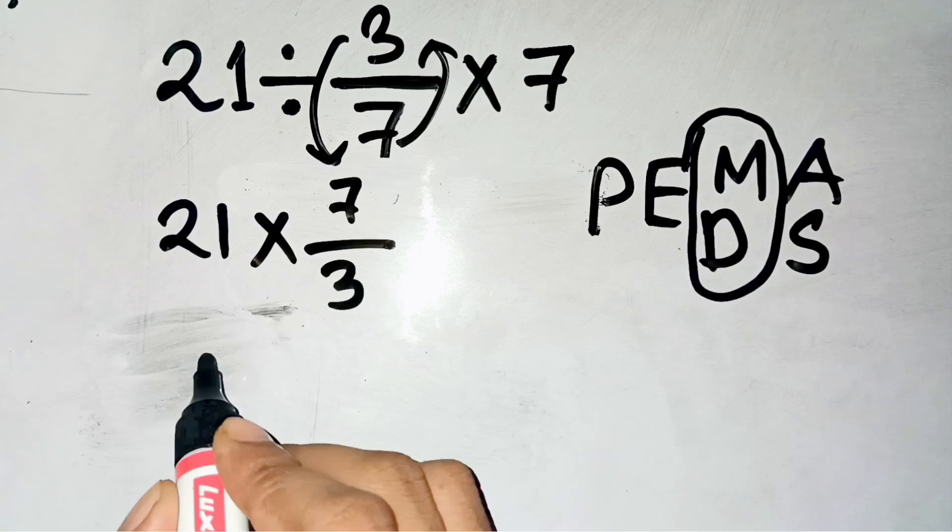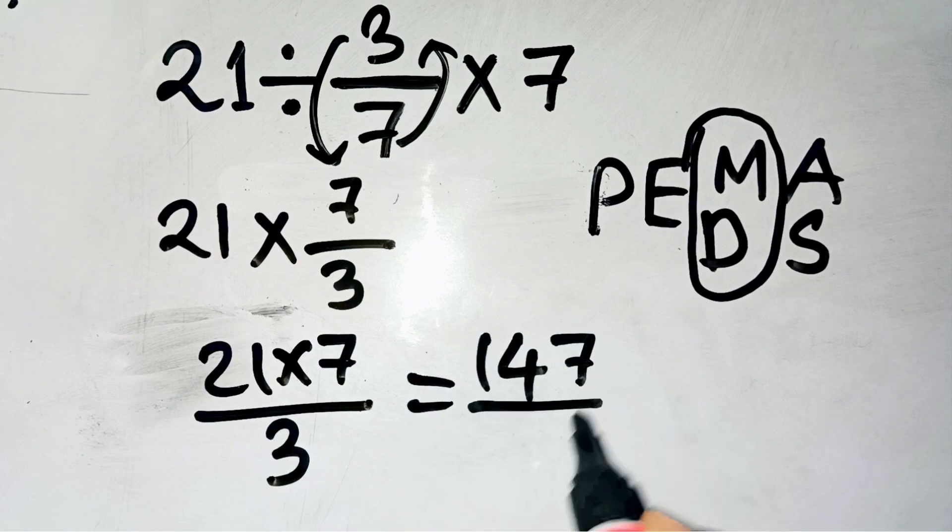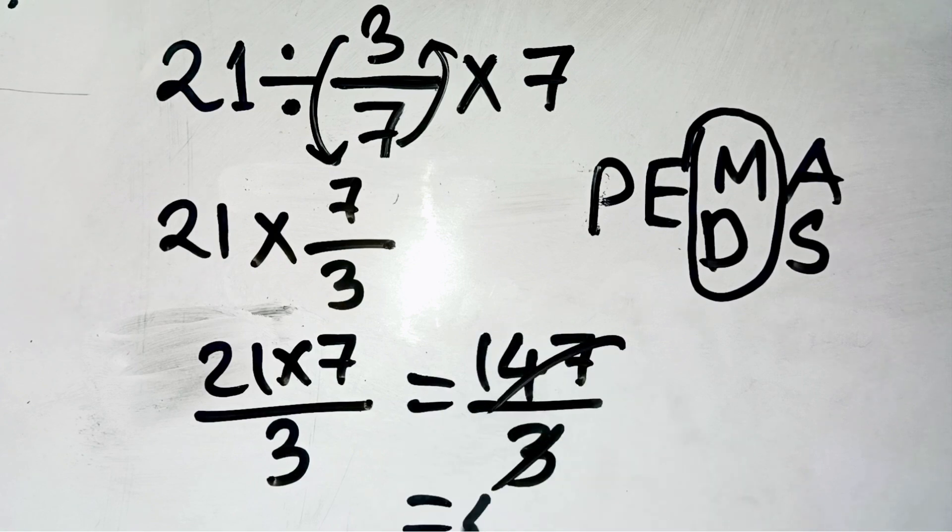21 times 7 over 3 equals 21 times 7 divided by 3, which is 147 divided by 3 equals 49.